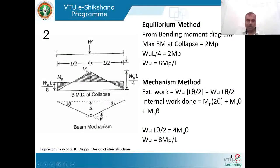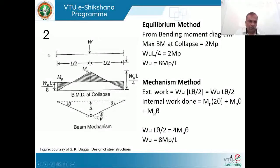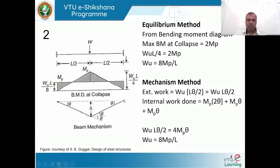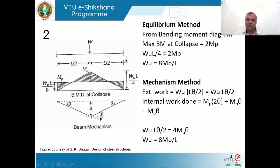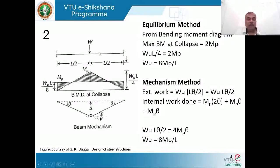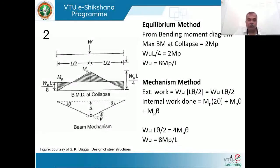Applying the mechanism method, the external work done by load W is W·δ = W·(L/2)θ = WLθ/2 — same as for the simply supported beam. To identify the internal work, note that in the simply supported beam we had one plastic hinge. In the fixed beam, we have plastic hinges at both ends and at the center. Hinge locations include all fixed supports, the point of load application, and locations where section properties change.